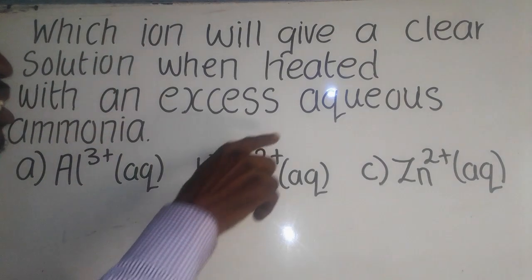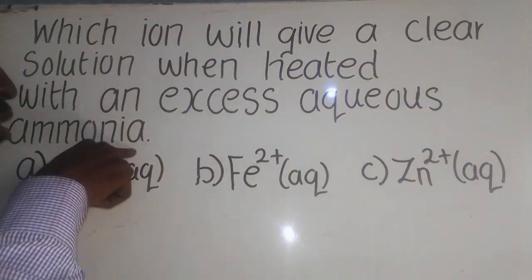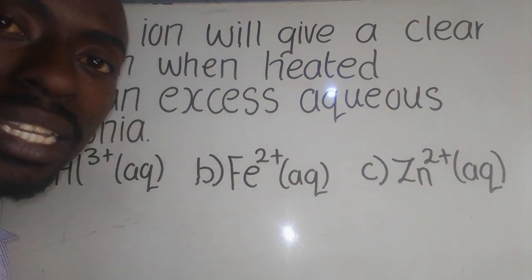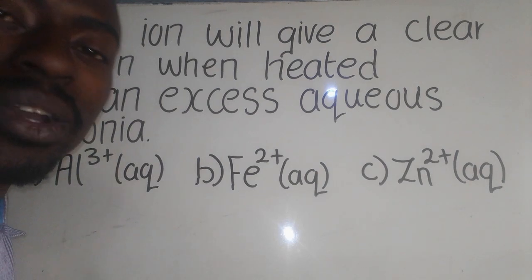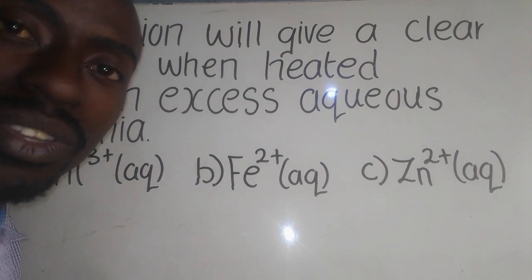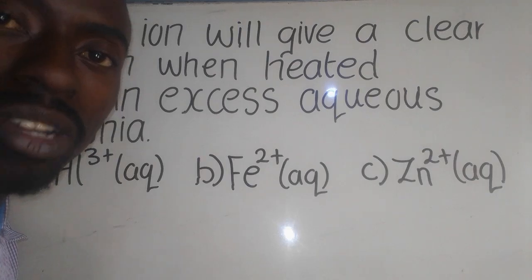Now, they have said what is an excess aqua ammonia. Excess aqua ammonia is just a reagent which is used in the identification of the cations.